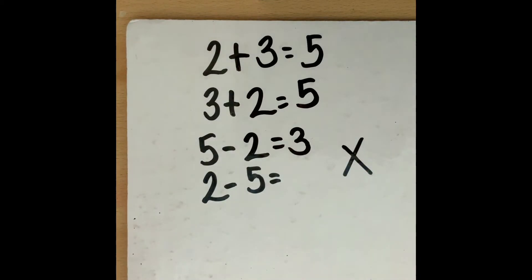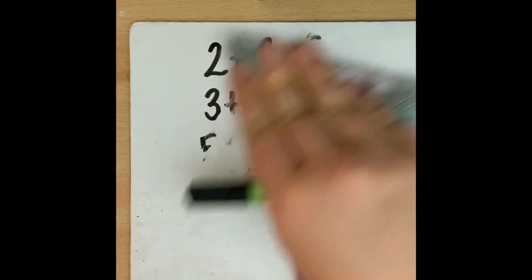Whereas addition we can swap the numbers round and it will not affect the answer. And we can use this for numbers up to 100. So let's have a go at some examples. When you're looking at addition and subtraction facts to 100 try and spot some patterns. So I'm going to start you off.